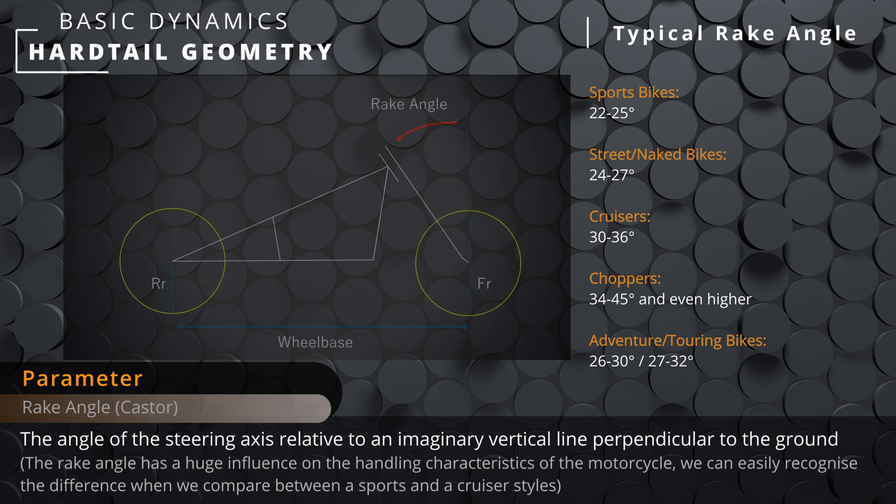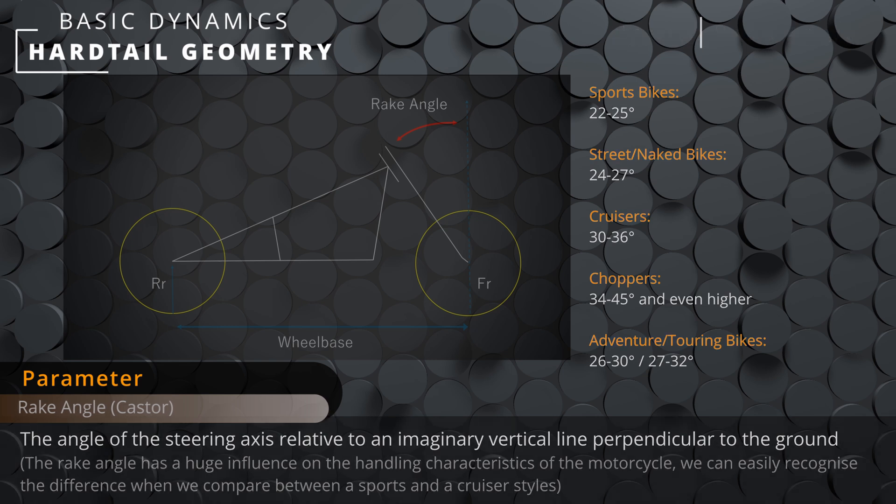A common everyday example of how rake angle affects stability is to think about your shopping trolley — all of the wheels are basically on a vertical axis and they all just vibrate and rattle like crazy.